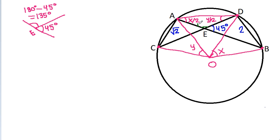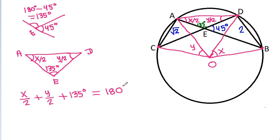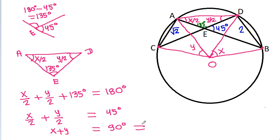This angle is 135 degrees. So x/2 minus y/2 equals 135 degrees, and x/2 plus y/2 equals 45 degrees, giving us x + y = 90 degrees. That means y = 90° − x.